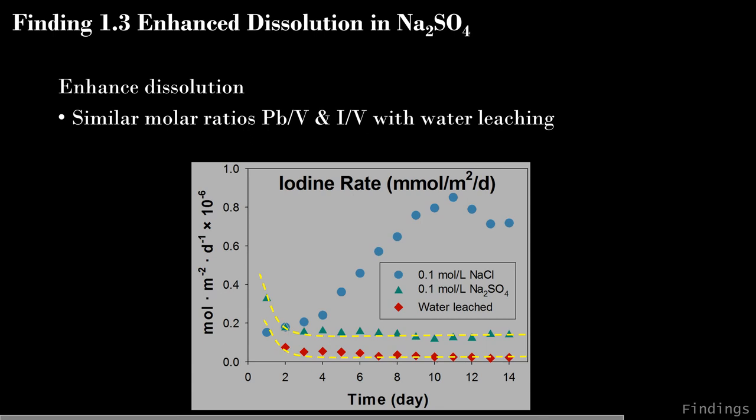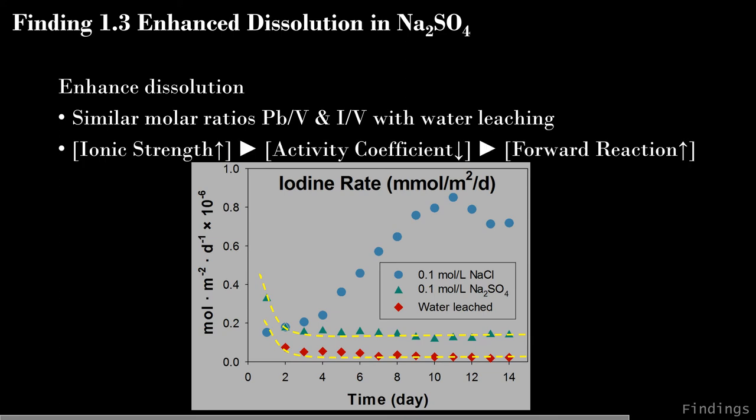In 0.1 mol/L sodium sulfate solution, the overall iodine release rate was accelerated compared to water leaching. The rate pattern in sodium sulfate is similar to deionized water—high initial release, then gradually decreasing to a flat line—indicating a similar mechanism of short-term diffusion and long-term dissolution. The overall release was accelerated due to the high ionic strength of the sodium sulfate solution, which reduced the activity coefficient and enhanced the forward reaction rate.